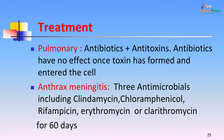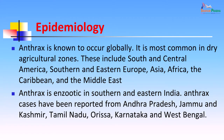Looking at the epidemiology of anthrax: it is known to occur globally and is most common in dry agricultural zones, including south and central America, south and eastern Europe, Asia, Africa, the Caribbean, and the Middle East. It has not been commonly reported from the United Kingdom. Anthrax is enzootic in certain states in India, specifically in the southern and eastern states. Cases have been reported from Andhra Pradesh, Jammu and Kashmir, Tamil Nadu, Orissa, Karnataka, and West Bengal.